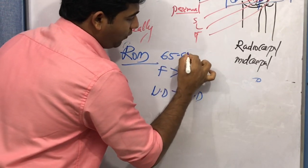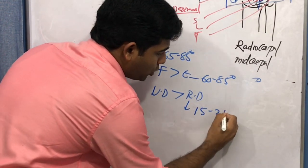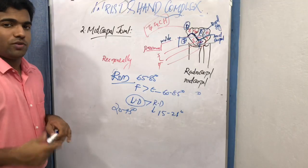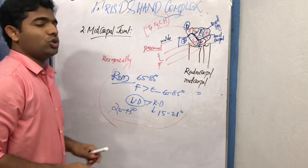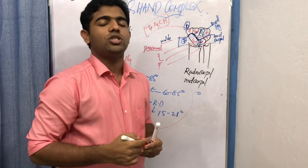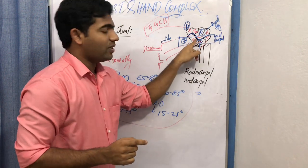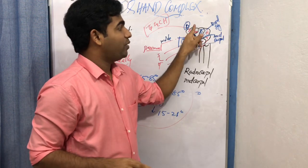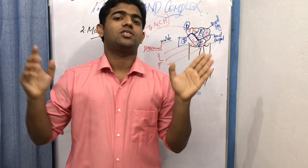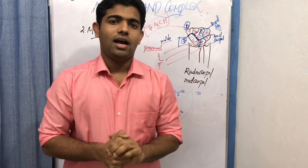For the wrist complex as a whole, the range of motion is: flexion 65–85 degrees, extension 60–85 degrees, radial deviation 15–21 degrees, and ulnar deviation 20–45 degrees. So flexion is greater than extension, and ulnar deviation is greater than radial deviation for the complete wrist complex. We will see the ligaments and muscles of this joint and their function in detail in the next session. Stay tuned, and if you like the video, don't forget to like and subscribe.